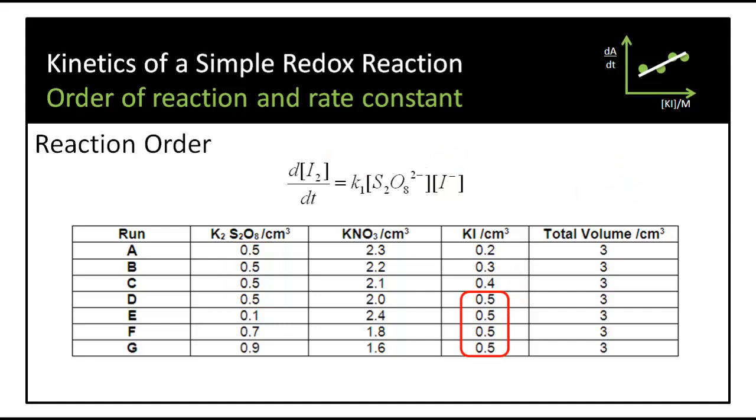We can do the same by holding the potassium iodide constant and varying the persulfate. In terms of the equation, we're holding the second term constant, increasing the first, and measuring the change in the rate. If this change is linear, we should see a straight line graph, confirming that the order with respect to persulfate is 1.